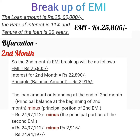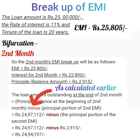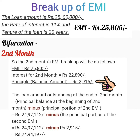So the second month's EMI breakup is: EMI = Rs 25,805; Interest = Rs 22,890; Principal = Rs 2,915. The loan amount outstanding at the end of the second month equals the principal balance at the beginning of the second month minus the principal portion of the second EMI, which is Rs 24,97,112 minus Rs 2,915, equaling Rs 24,94,197.